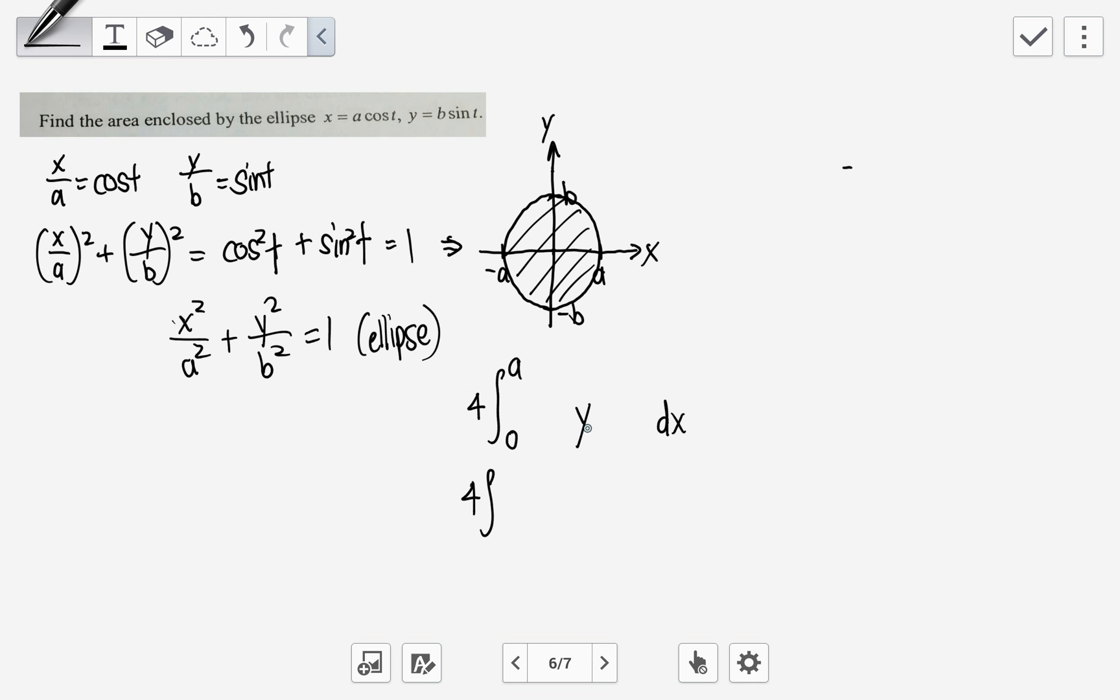So first thing, 4 integrate. The y is just b sine t. I'm going to change them one by one. So why I change to b sine t. So dx, but what is dx? I must make use of this equation. dx over dt equals to minus a sine t. That means my dx is just equals to minus a sine t dt. So this dx I will replace with minus a sine t dt.